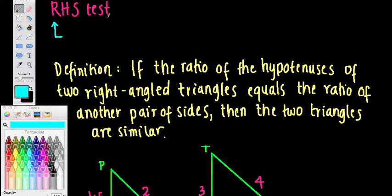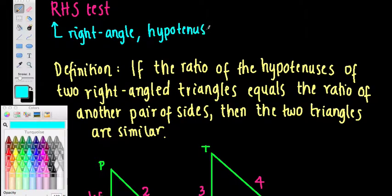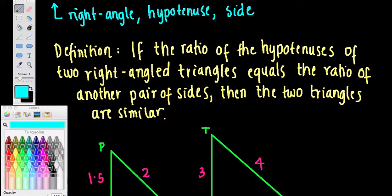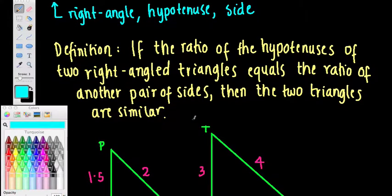The final test is the RHS test. R stands for Right angle, H for Hypotenuse — which we know from trigonometry and Pythagoras — and S for Side. The definition says: the ratio of the hypotenuses of two right-angled triangles equals the ratio of another pair of corresponding sides. Both triangles must have a right angle, and those two ratios must be equal for the triangles to be similar.